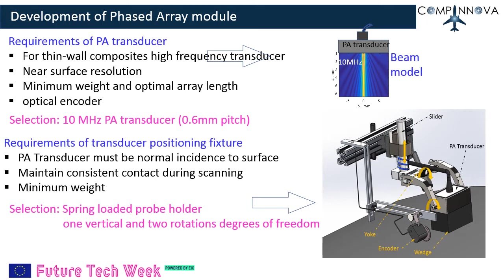The PA transducer must always be normal to the surface for efficient ultrasound transmission and reception. Hence a spring-loaded gimbaled probe holder, which maintains normal incidence of the wedge and consistent contact with the surface, is selected. The CAD schematic shows the transducer positioning fixture carrying the PA transducer, wedge, and encoder assembly.